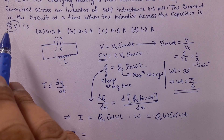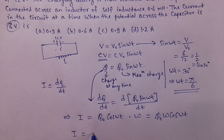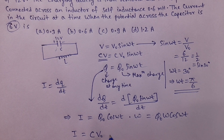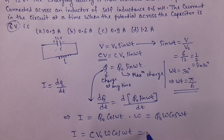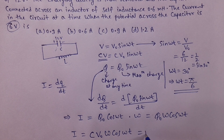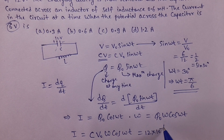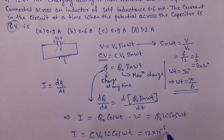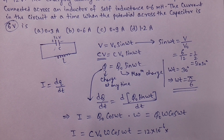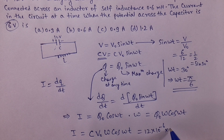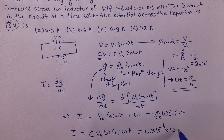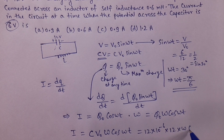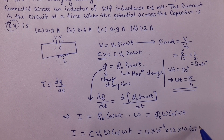Current का value जब 6V voltage drop है: i = CV₀ · ω · cos(ωt). C का value देखते हैं: 2μF = 2×10⁻⁶. V₀ initial value 12V है. Omega हमारे पास नहीं है अभी. cos(ωt) = cos(π/6). Omega हम लोग कहाँ से निकालेंगे?